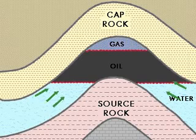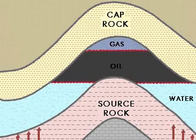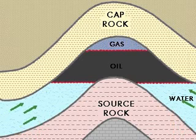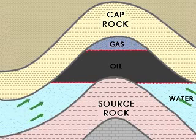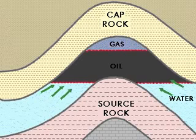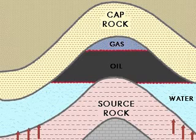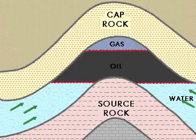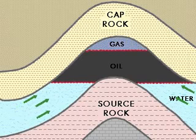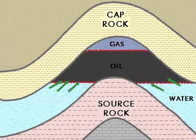The expelled oil keeps moving upward towards the surface till it comes across an impervious rock known as the cap rock. This cap rock stops the further upward migration of oil. As a consequence, the oil starts moving laterally within the horizon and gets concentrated in the pore space of the reservoir rock, where it accumulates to form oil pools. This process is known as secondary migration.